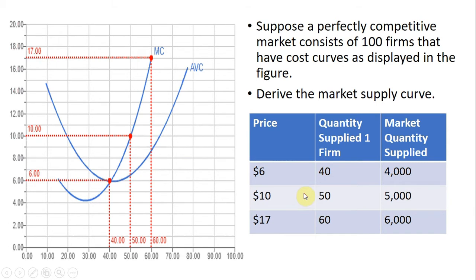So to get that relationship, since we have 100 firms just like this one, all we have to do is take this 40 and multiply it by 100. So in other words, we have 100 firms, each producing 40 units, so the total market quantity supplied will be 4,000.